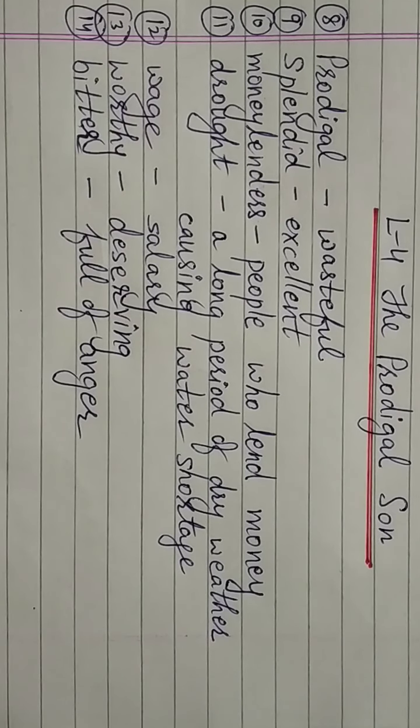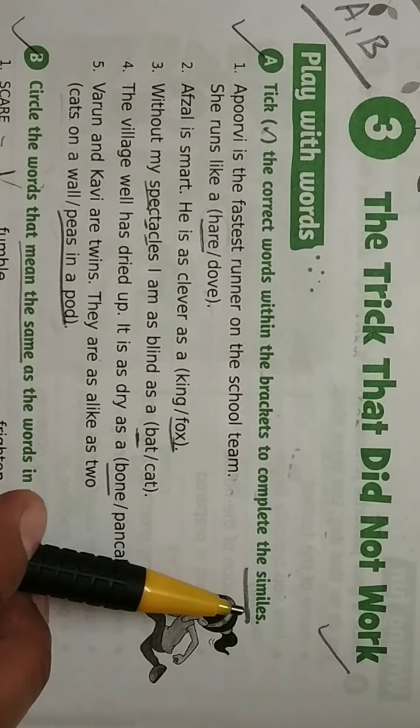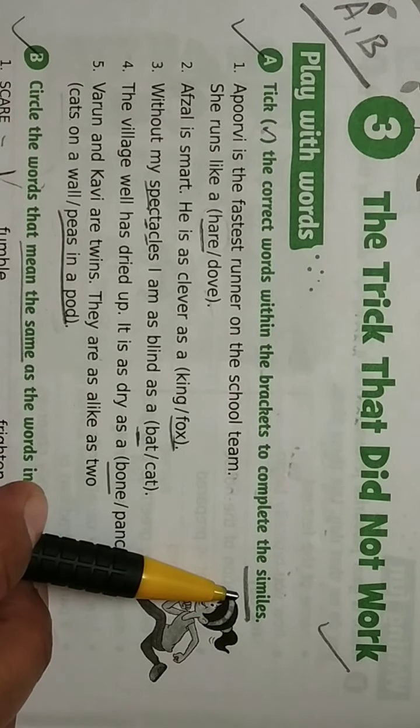Now we will move to the workbook. Open page number 14 of your workbook, and then we will revise lesson number 3, The Trick That Did Not Work exercises. Question A: Tick the correct words within the brackets to complete the similes. Now what do you mean by similes? Remember,